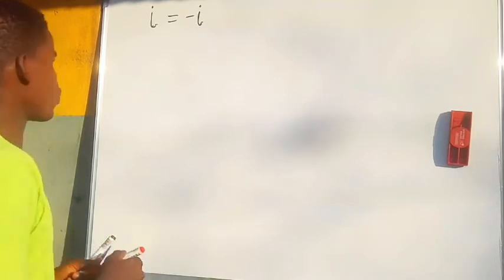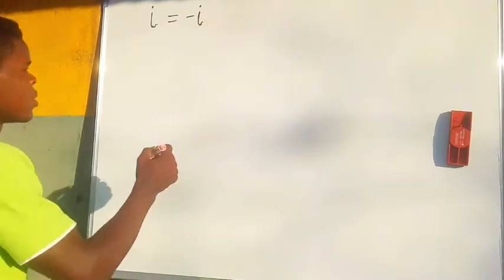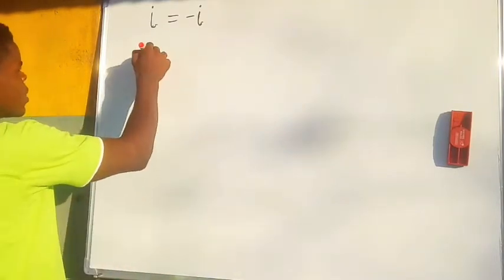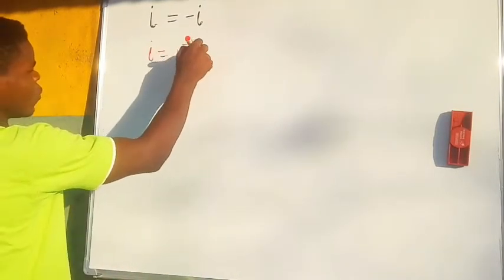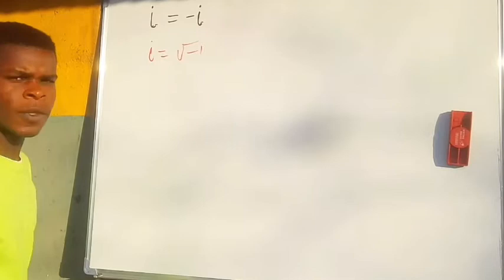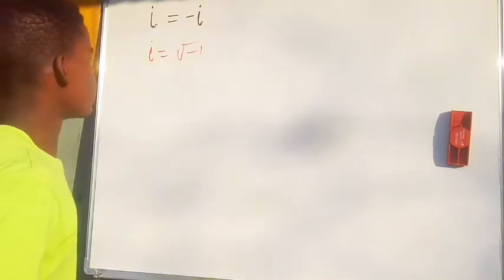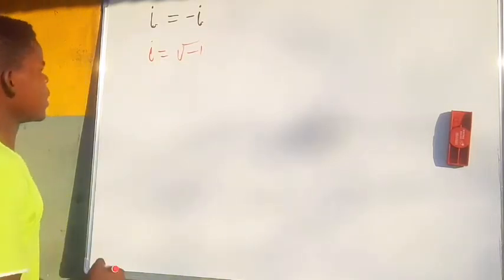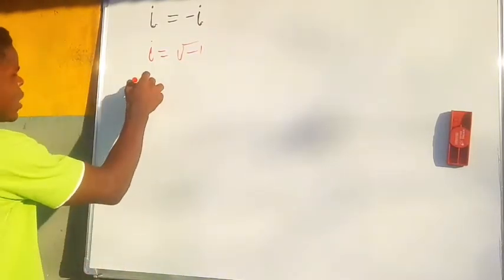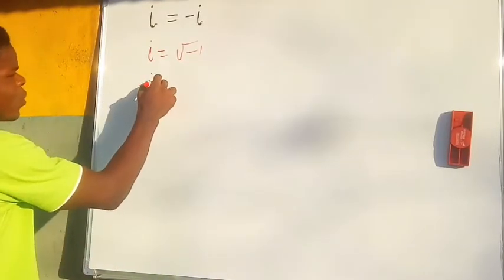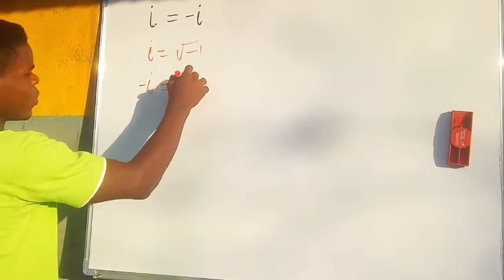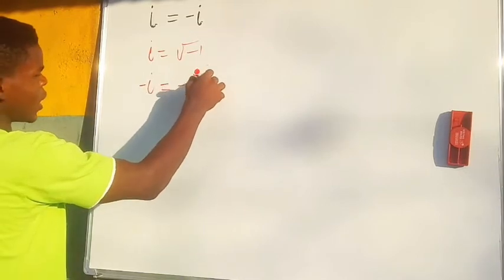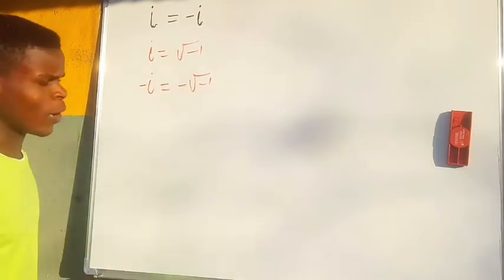First of all, you know what i is. Your i is said to be the square root of negative 1. So if this is the case, that would mean that negative of i would be negative square root of negative 1.